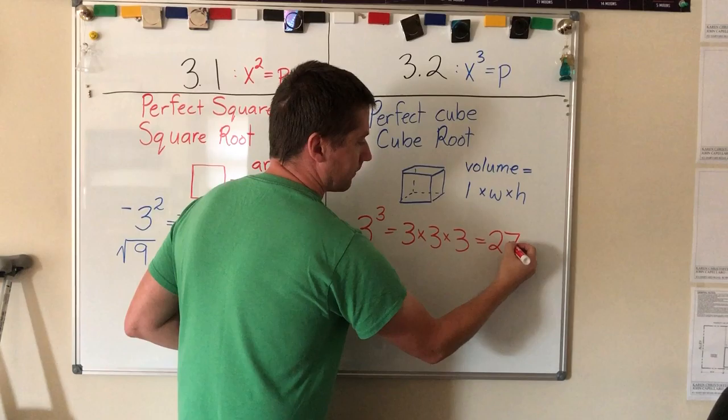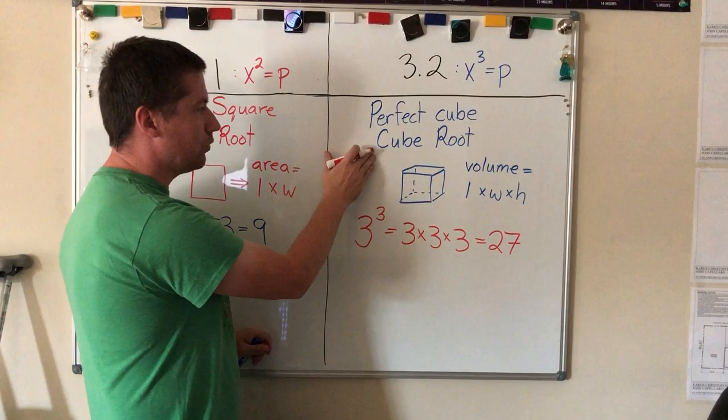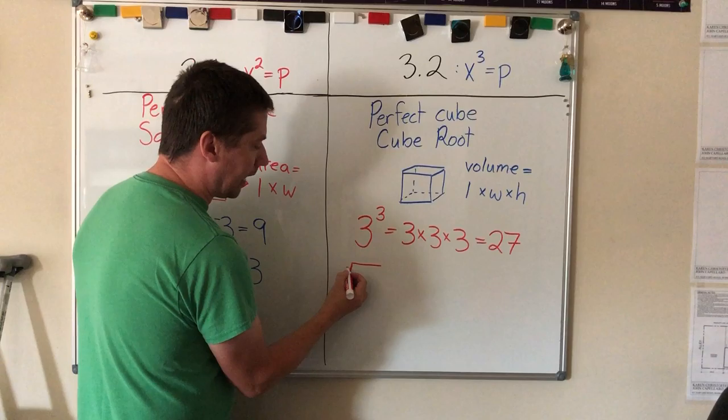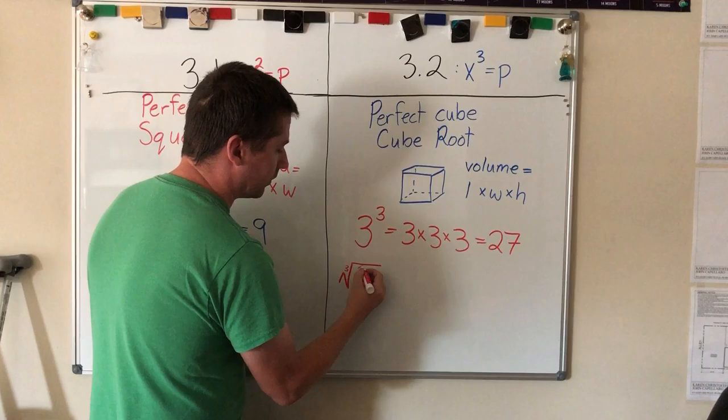You write it as 3 × 3 × 3 equals... so 3 × 3 is 9, 9 × 3 is 27. When we are writing it in a cube root we're going to use a very similar symbol as the square root, but now we're going to add a 3 inside this little V here and we're going to put 27 here.